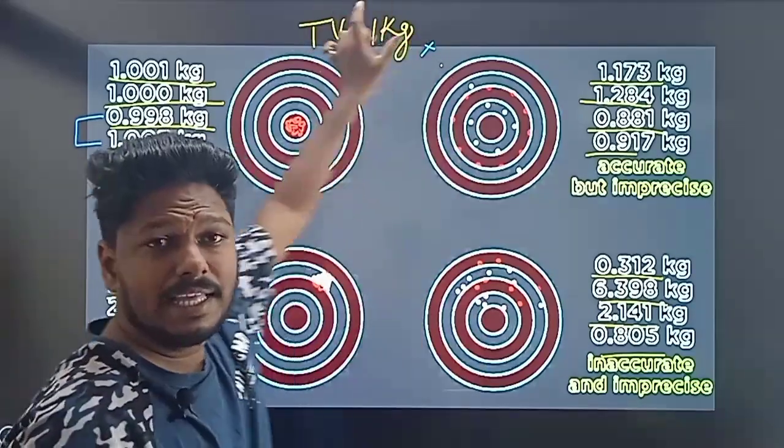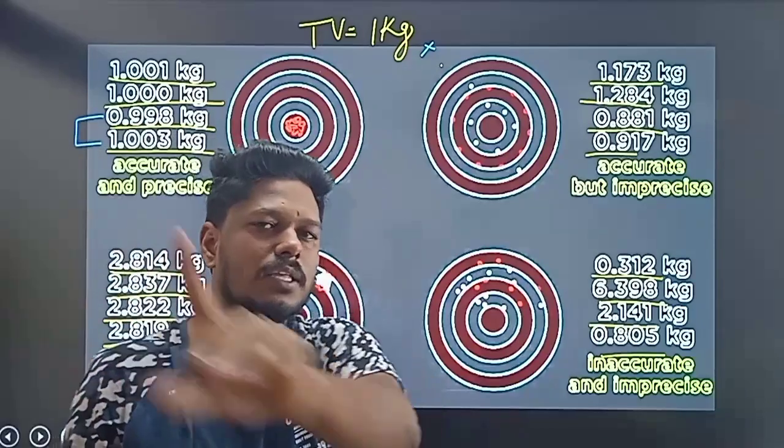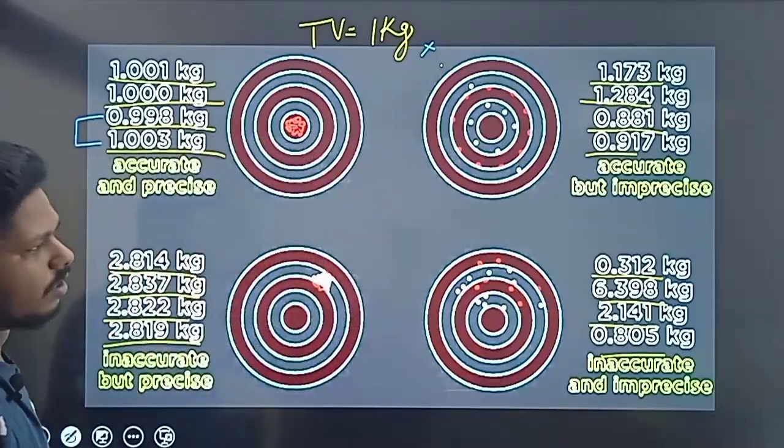I see the true value. You can see the same values clustered together. Where are the same values? That is precision.